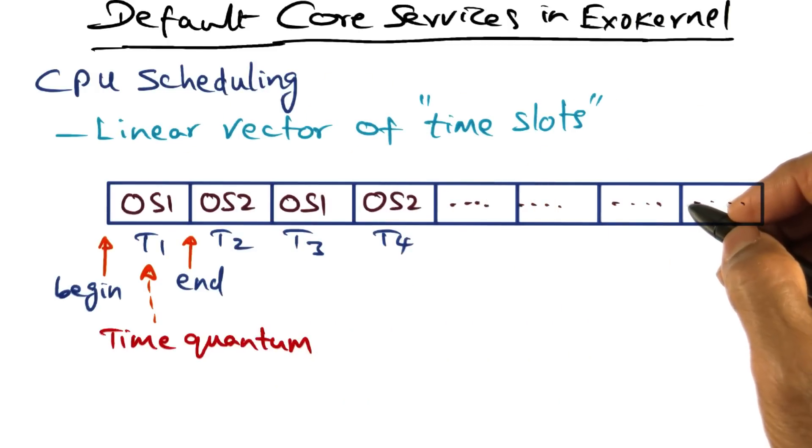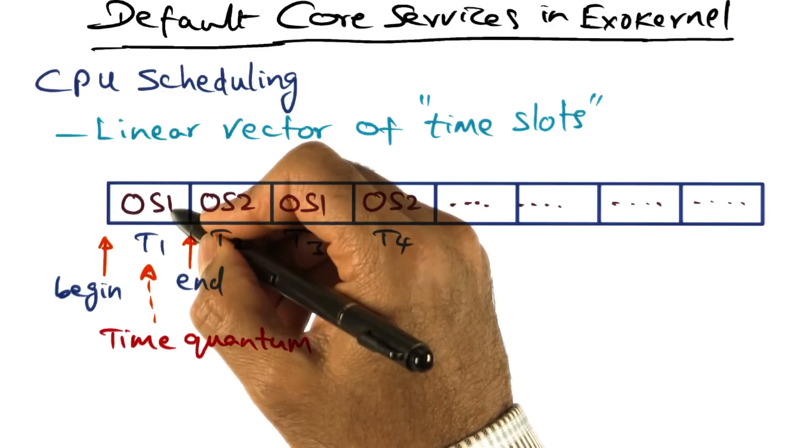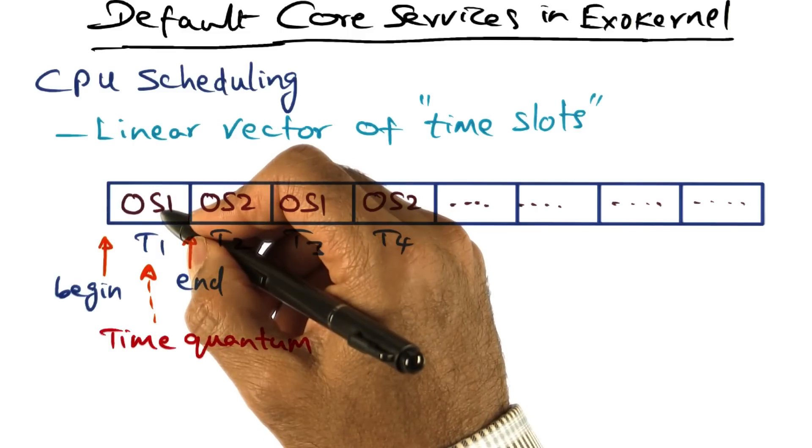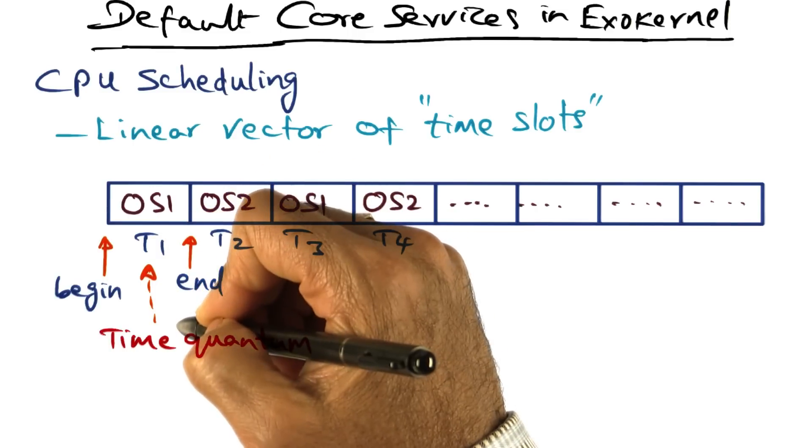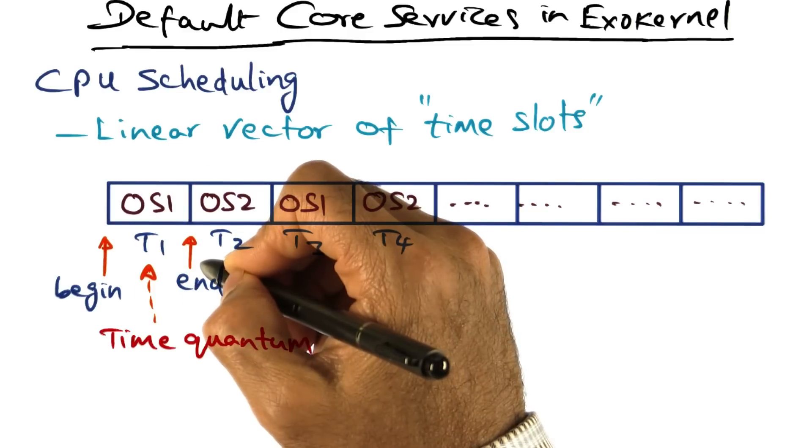CPU scheduling in exo-kernel is essentially looking at this linear vector of time slots and asking the question: in this time quantum, which is the library operating system that should be running on the processor? There is a start time for the time quantum and an end time for the time quantum.